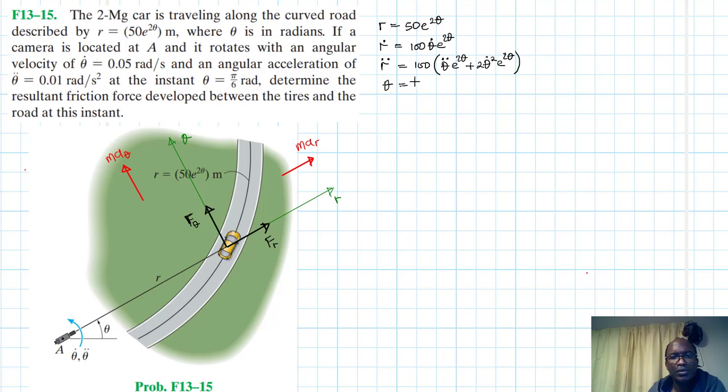Then we do have theta equal to pi over 6 rads. For this one, we don't have to convert this to degrees. We just have to use it the way it is, because this is considered as more or less unitless. This has to be left in as rads the way it is. Then we do have theta dot given. This is the angular velocity, and this is equal to 0.05 rads per second. Angular acceleration, this is equal to 0.01.